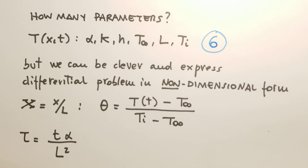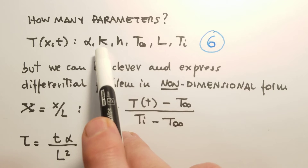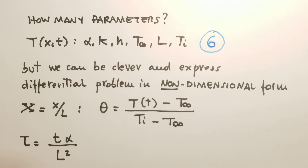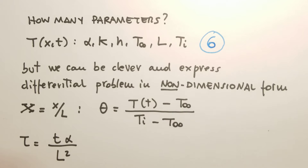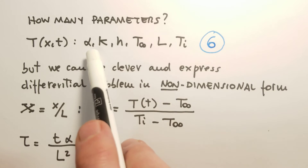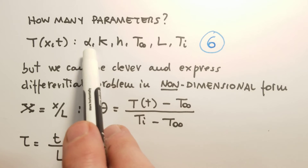For this problem, the temperature depends on space and time, and we have six parameters: the thermal diffusivity alpha, the thermal conductivity k, the convection coefficient h, the fluid temperature T-infinity, L (the half-thickness of the plane wall), and Ti (the initial temperature of the plane). One approach is to analyze how the temperature profile and its evolution change as we vary these parameters, but this is very tedious.